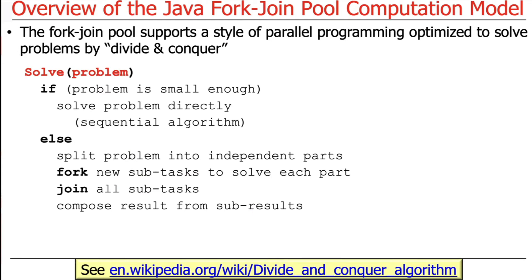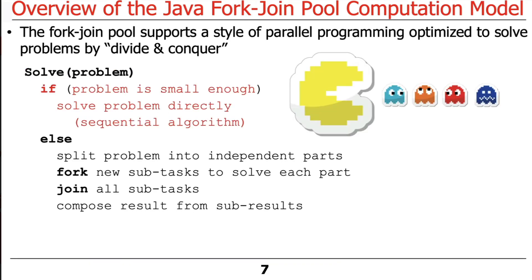The ForkJoin Pool supports a divide-and-conquer style of parallel programming. As you've probably learned in your algorithms and data structures courses in the context of algorithms like QuickSort and MergeSort, divide-and-conquer works by taking the entire problem and, if the problem is small enough, solving it directly using a sequential algorithm. That's called the basis case for the recursion.